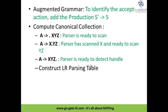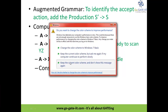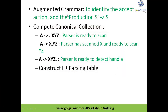Now let's get into the LR parsing table construction. There are three important points: augmented grammar, the canonical collection, and the construction of the LR parsing table. For augmented grammar, to identify the accept action we use the production S' → S. This S' or S symbol denotes the starting symbol of the grammar, and this addition of the production to the existing grammar is called augmented grammar.